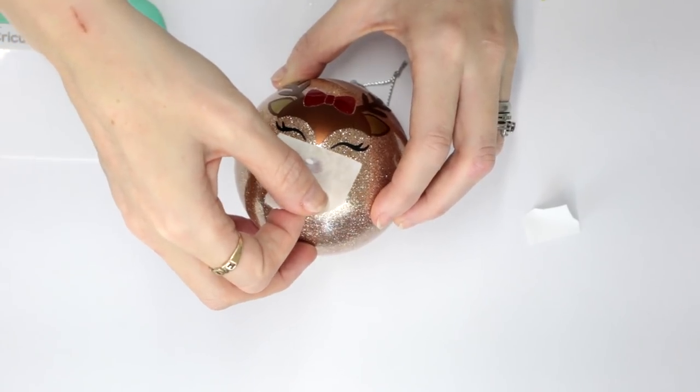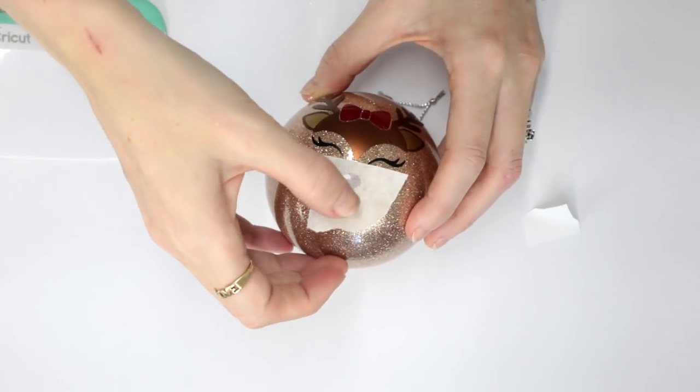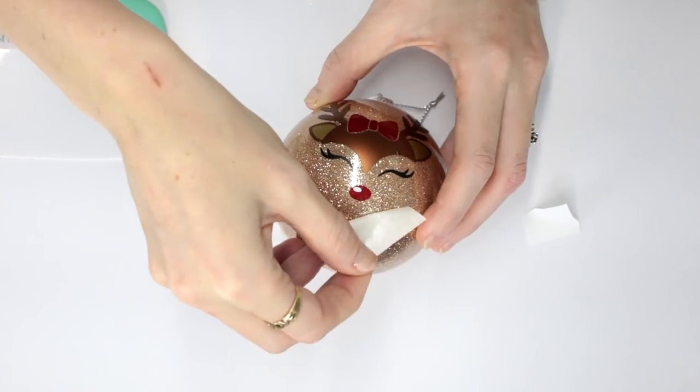For any other pieces you want to add in, you can individually come in and place those. If they're small like this one, you don't need to add the snips. It's only for larger items.